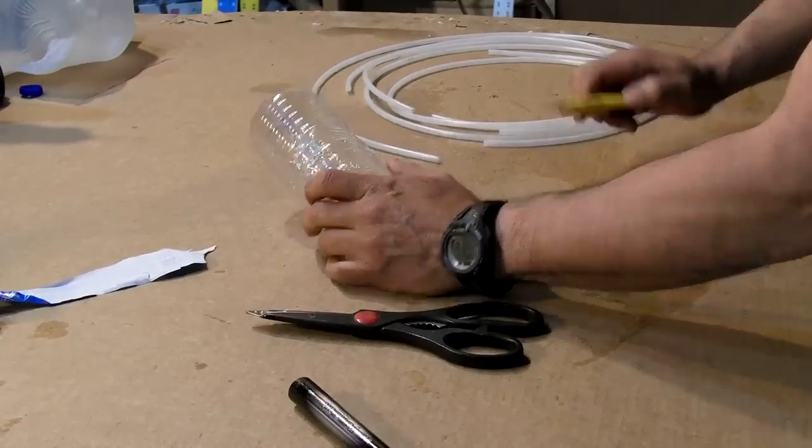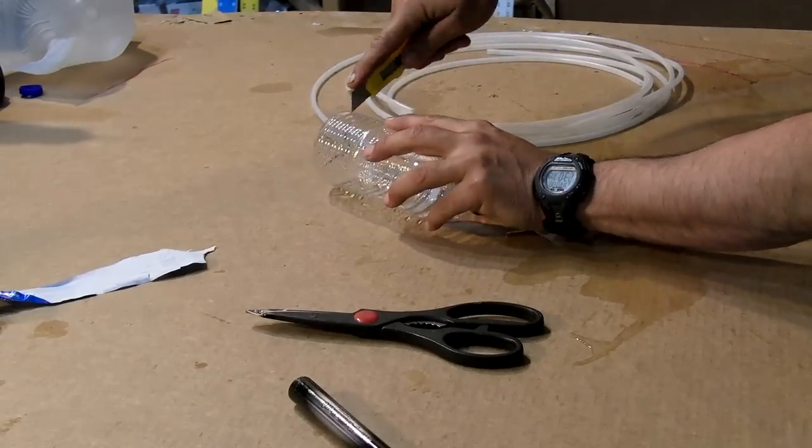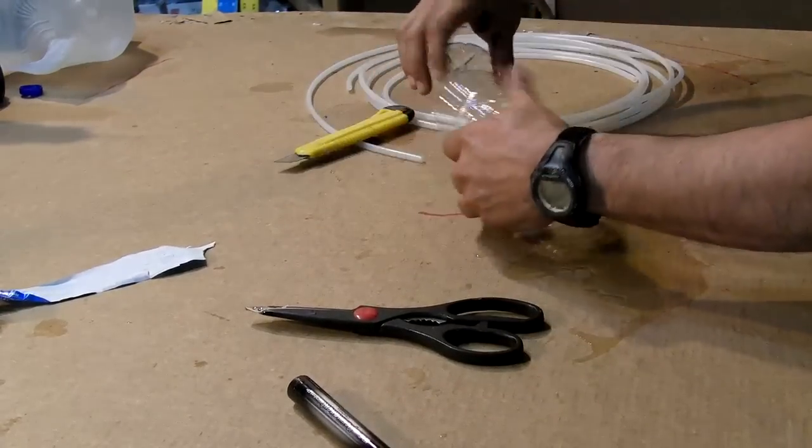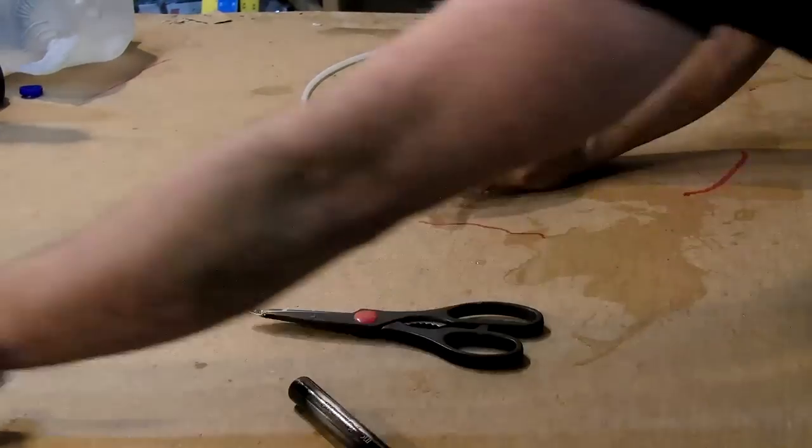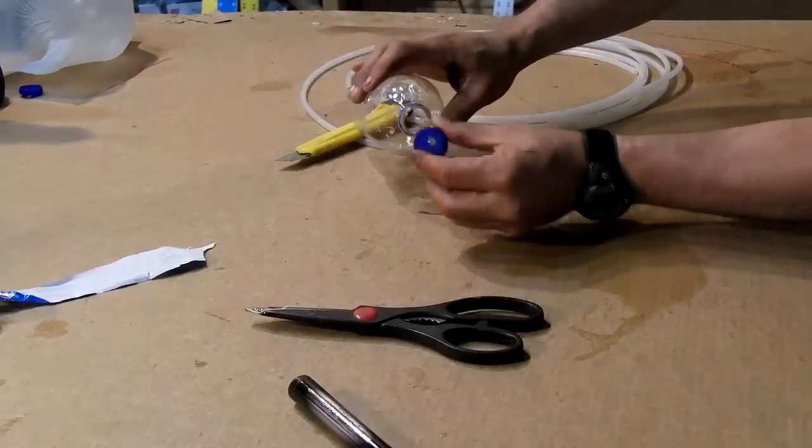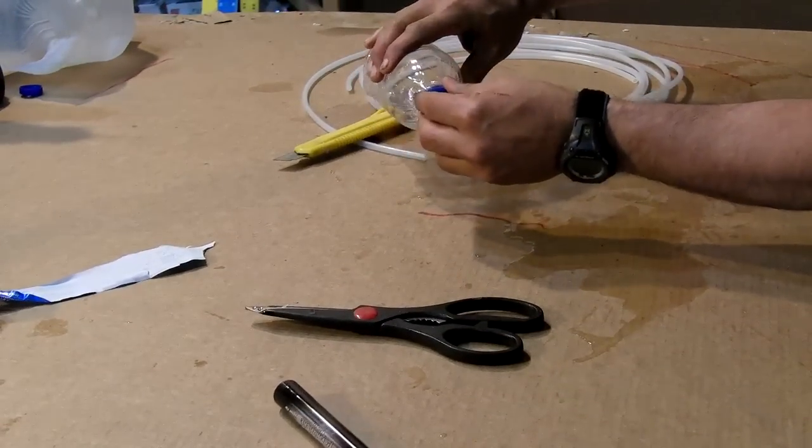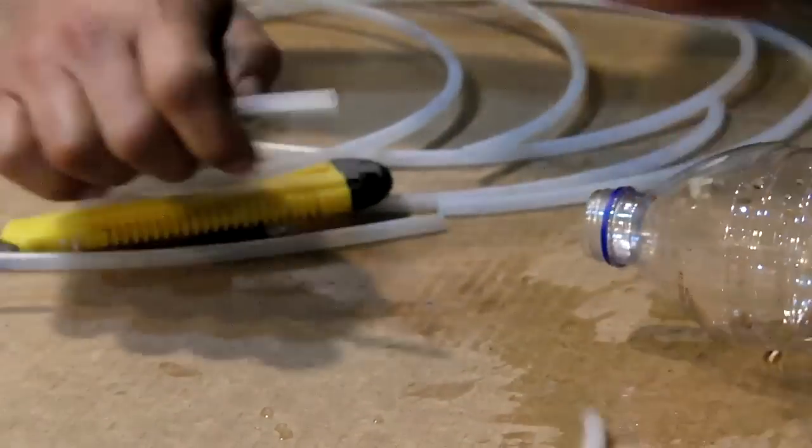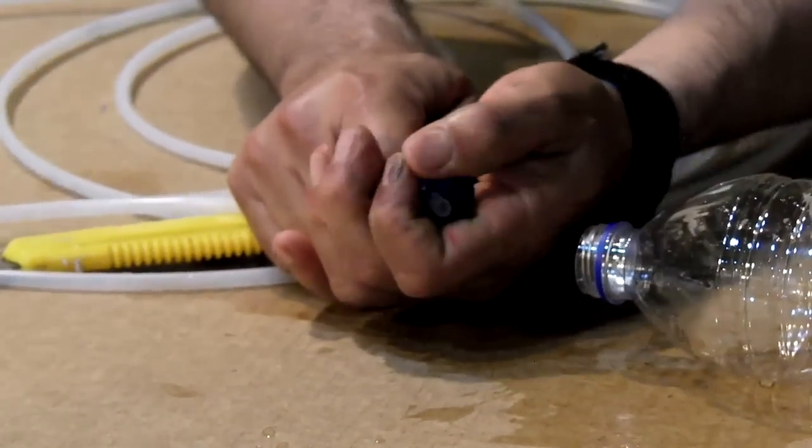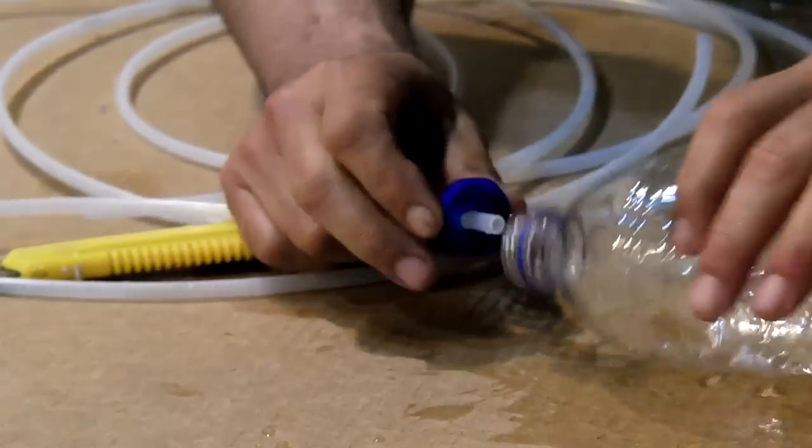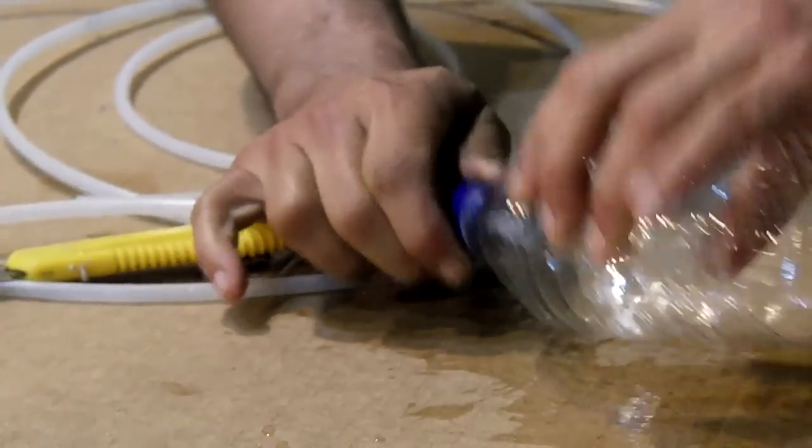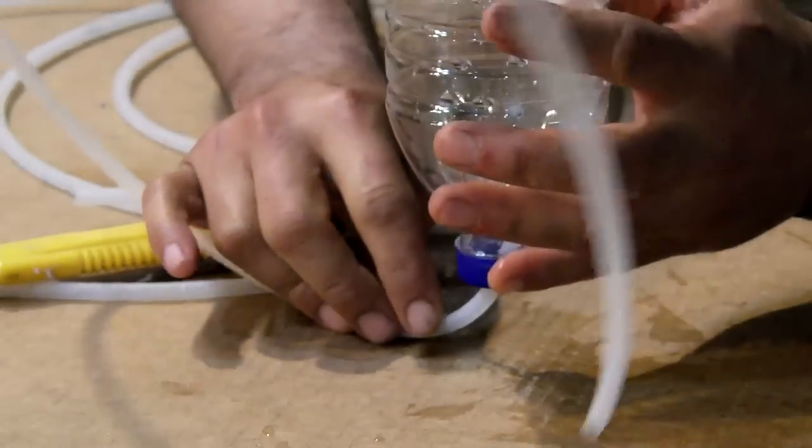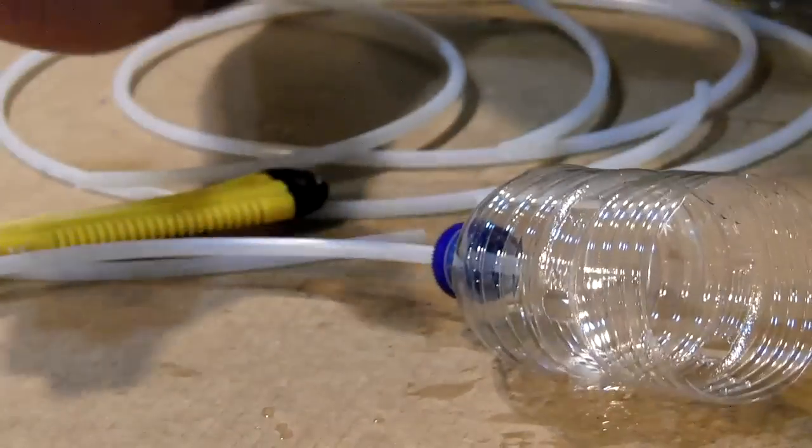Bottle number one is going to be our fountain bottle. So you want to cut the bottom of it off. Just take a knife, cut it off. Now bottle number one will get the cap with the single hole in it. Bottle number one with the single hole in it has a piece of poly tube pressed in it, just about a half inch to a quarter inch deep and it's screwed in place. This does not go all the way in. This will be our fountain. So bottle number one is completely done.